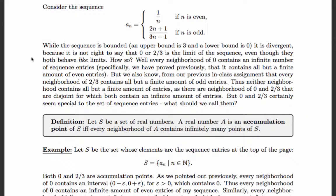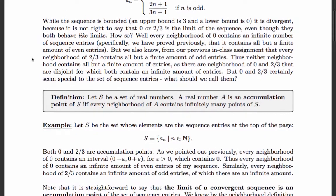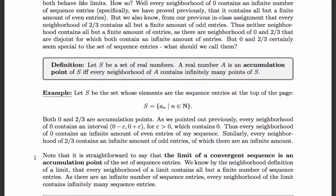As an example, let's consider the set that contains all the sequence entries a_n. Both 0 and 2/3 are accumulation points. Any neighborhood of 0 contains an infinite amount of even entries of a_n, which are all elements of S. Similarly, every neighborhood of 2/3 contains an infinite amount of odd entries of a_n, which are all elements of S. Therefore, every neighborhood of 0 contains an infinite amount of elements of S, and every neighborhood of 2/3 contains an infinite amount of elements of S — so they are, by definition, accumulation points.